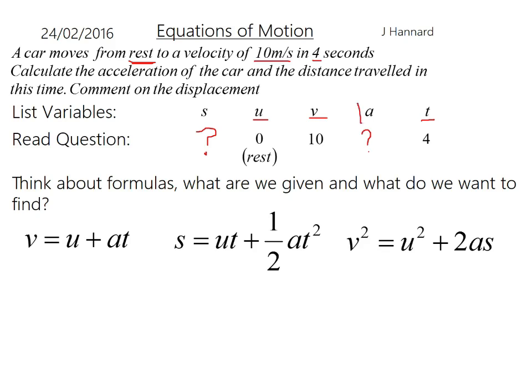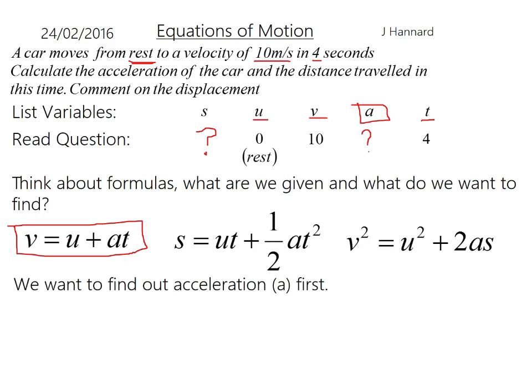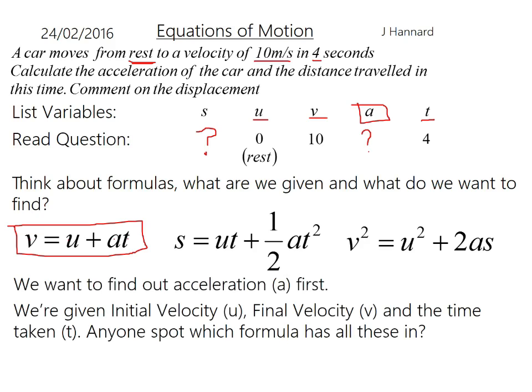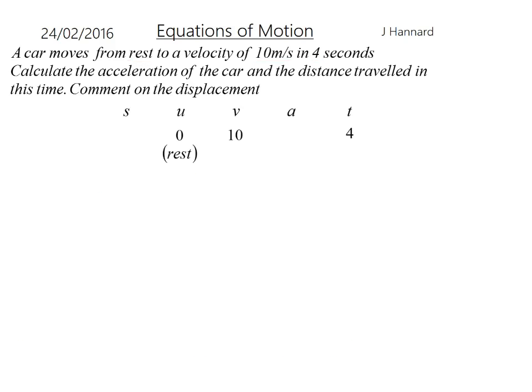We want to find out A first, so I'm looking for a formula with all of those in, and I'm thinking it's this: V equals U plus AT. Apply the formula, substitute your numbers in, so drop the values in exactly where you see them in the formula.